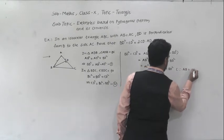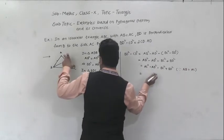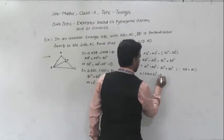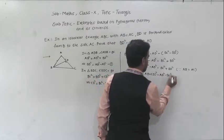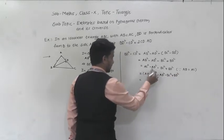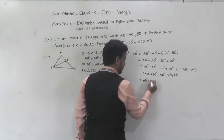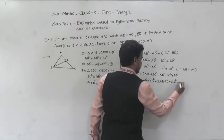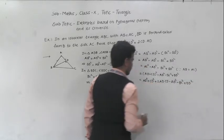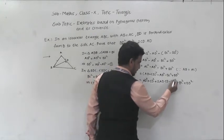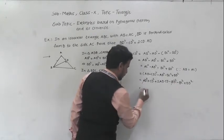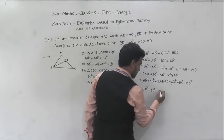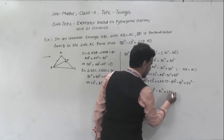Now AC can be written as AD plus CD. So we expand: AD plus CD bracket squared minus AD squared minus BC squared plus BD squared. Expanding the bracket: AD squared plus CD squared plus 2AD into CD minus AD squared minus BC squared plus BD squared.